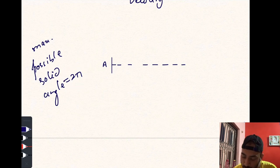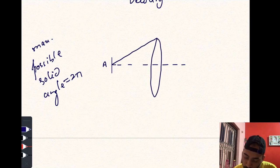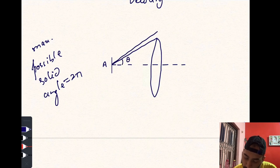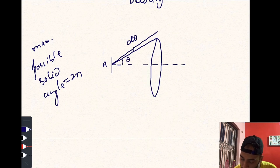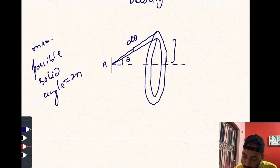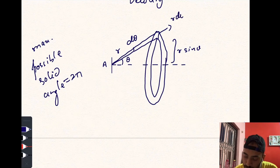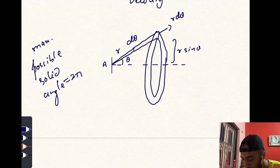Let us consider one such region making an angle θ. This angle is dθ. So this radius would be, let this be r, so this would be r sin θ, and the thickness is r dθ. If you see carefully, the number of photons being thrown along this area would be in this direction.